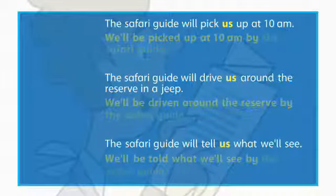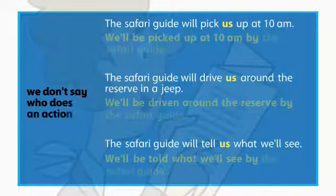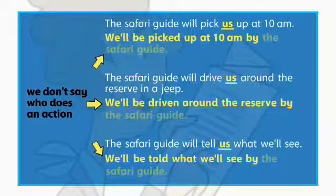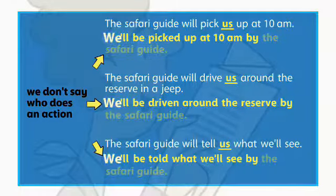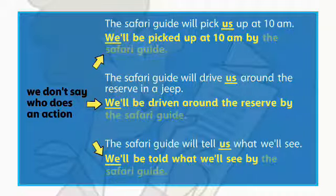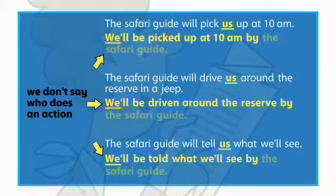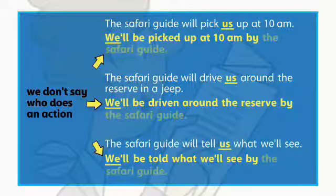We use the passive voice when we don't say who does an action. The object of an active sentence becomes the subject of a passive sentence. We can use the passive voice in the future tense. If we want to say who did the action, we use 'by' and the doer of the action.